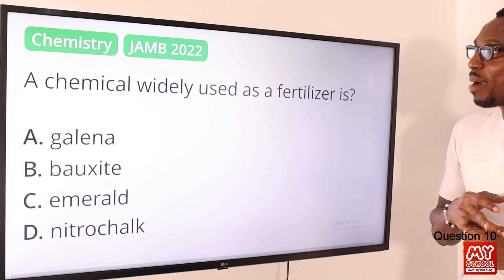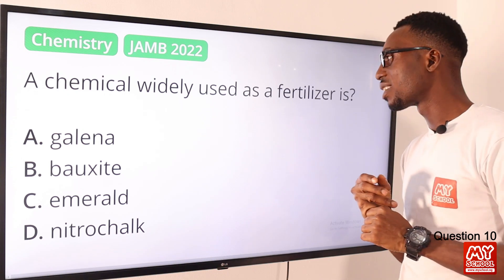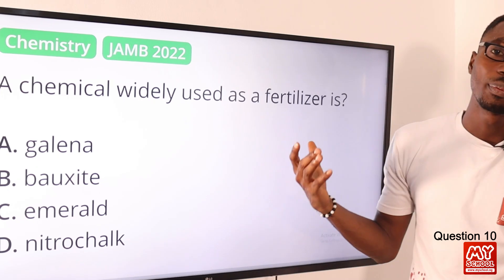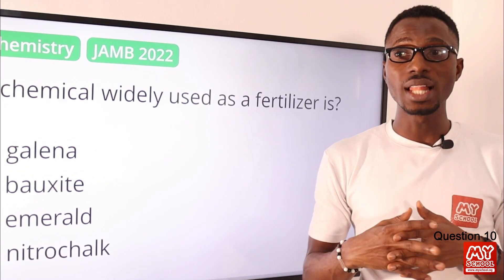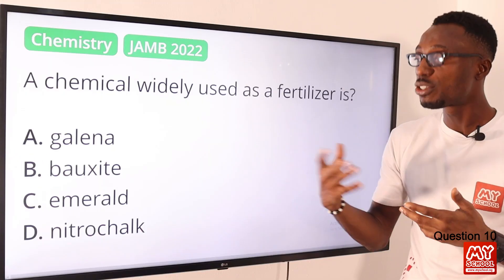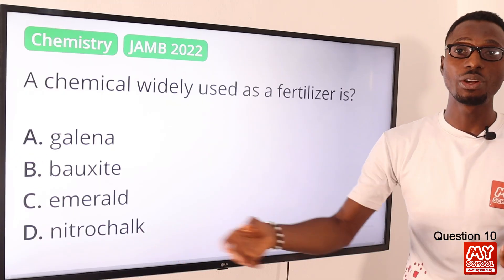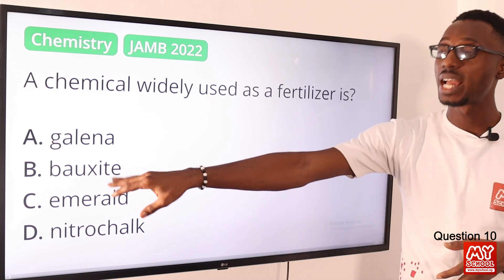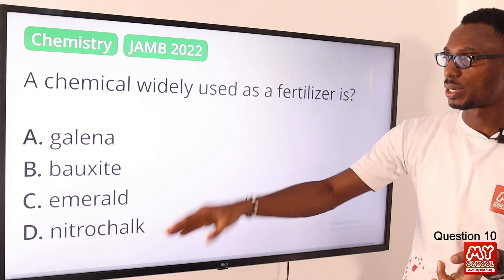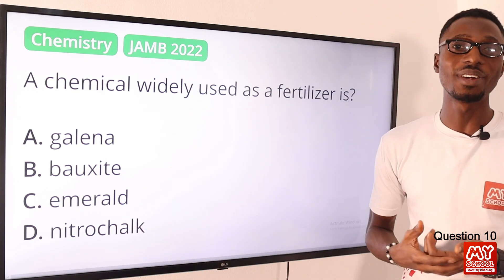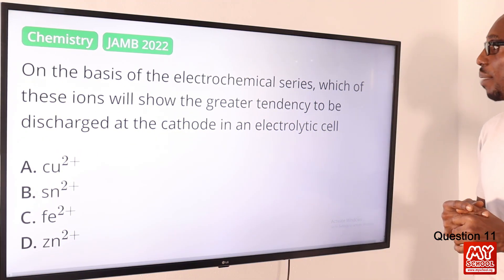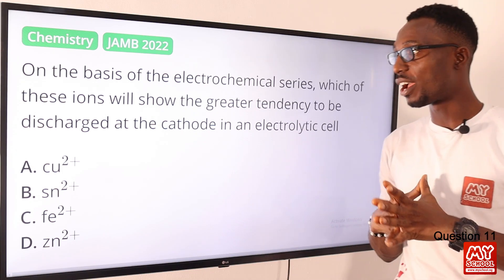Question ten: a chemical widely used as a fertilizer is what? It can be presented with various names like calcium ammonium nitrate, nitro limestone, or nitro chalk — a very good inorganic fertilizer. The correct option is option D.